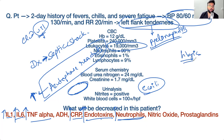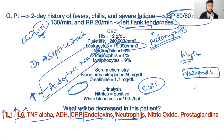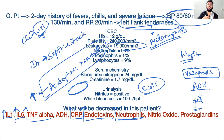Acute phase reactants are increased in septic shock. Now, in hemorrhagic shock, vasopressin levels are high because we want to retain fluids. But what do you think happens to vasopressin levels in septic shock? They decrease. Vasopressin and antidiuretic hormone are decreased in septic shock due to dysregulation.